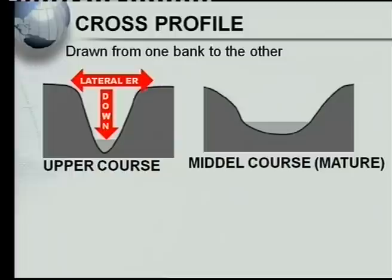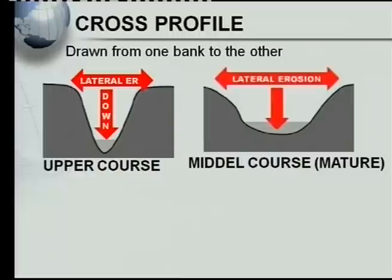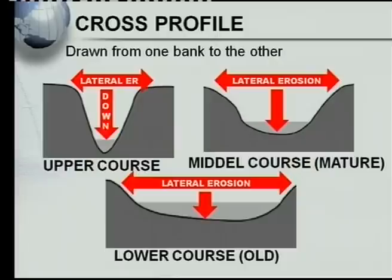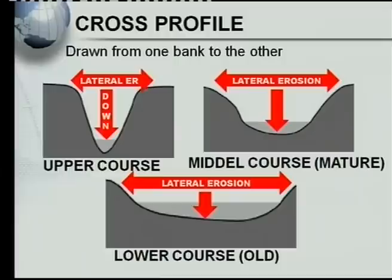In the middle course, the river has just exited the mountain. Without those steep slopes, lateral erosion can now take place, so the river becomes wider over time. In the lower course it becomes even wider, where lateral erosion is even greater. So remember: in the upper course you get a deeper river with very little lateral erosion; in the middle course the river can widen; and in the lower course the river is even wider.